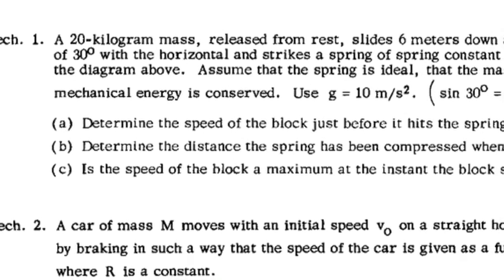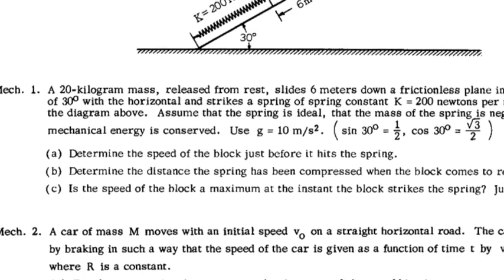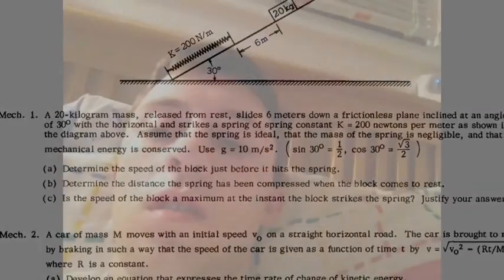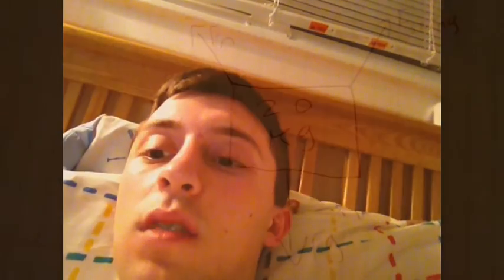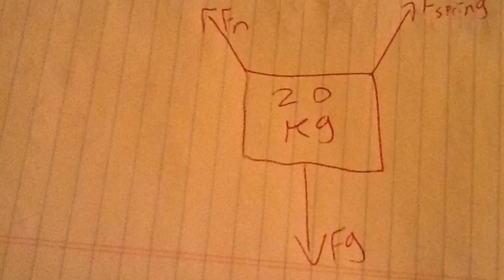And finally, part C, is the speed of the block a maximum at the instant the block strikes the spring? I will justify. Thinking back to kinematics, the downward speed would be maximized when the block no longer accelerates downward, or when the net force is zero. To find when the net force is zero, we construct an FBD at the point of contact with the spring.